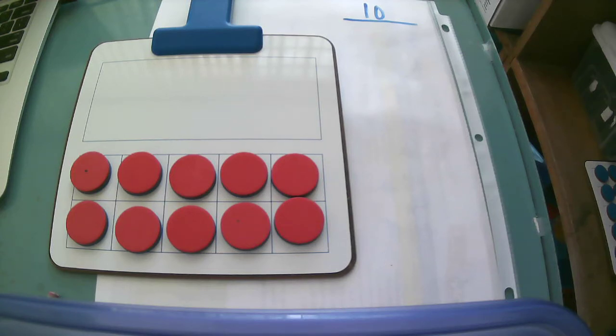Today for our math strategies video we're going to be talking about number partners for the number 10. Remember, number partners are the numbers that when added together or put together make 10. I'm going to be using a 10-frame today to help me find those number partners and then we're going to be recording those number partners down.